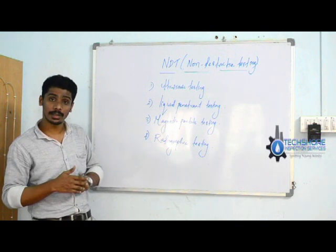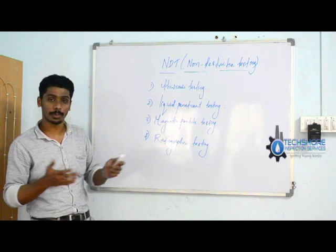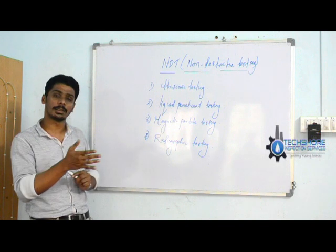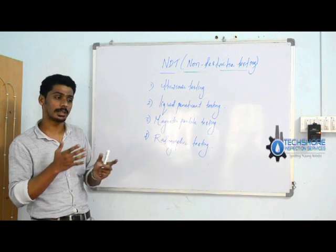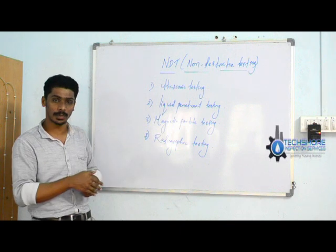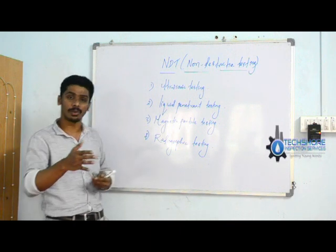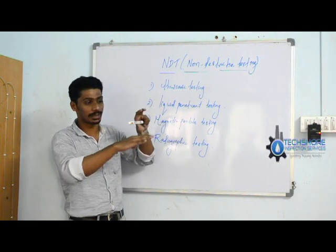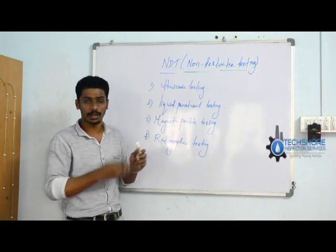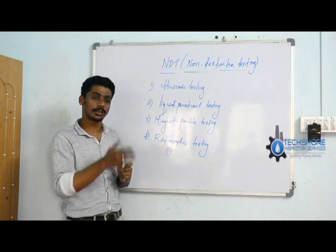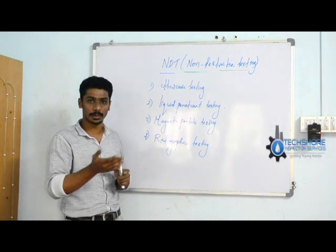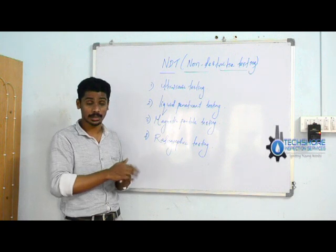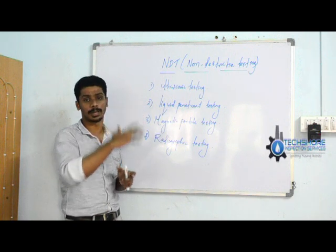We take these ultrasonic sound waves and propagate them into our test material. Once the ultrasonic sound waves transmit inside the test material, they either hit the back wall — meaning the far end of the test material — and reflect back. Otherwise, if there is any defect inside that particular test material, the waves directly hit the defect area and reflect back.